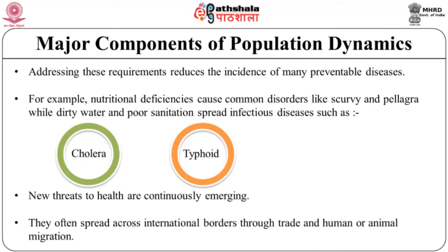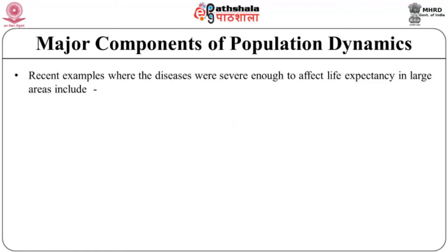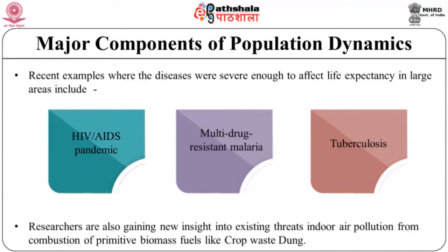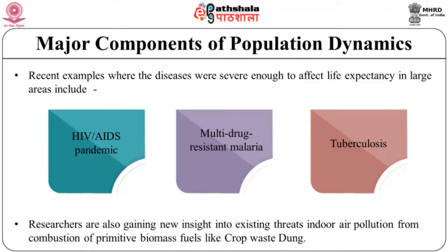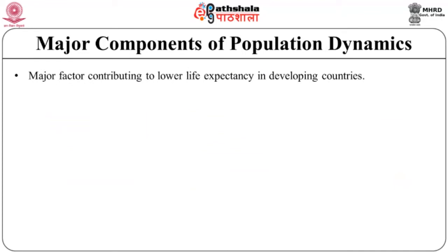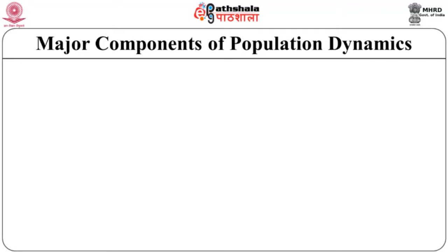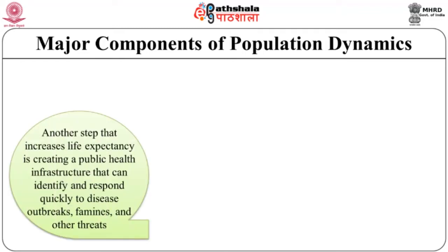Recent examples of diseases severe enough to affect life expectancy include HIV/AIDS pandemic, multi-drug resistant malaria and tuberculosis. Researchers are also gaining new insight into existing threats such as indoor air pollution from combustion of primitive biomass fuels like crop waste and dung, which is a major factor contributing to lower life expectancy in developing countries. Environmental investments such as providing cleaner energy sources and upgrading waste treatment systems can significantly improve public health. Another step that increases life expectancy is creating a public health infrastructure that can identify and respond quickly to disease outbreaks, famines and other threats.